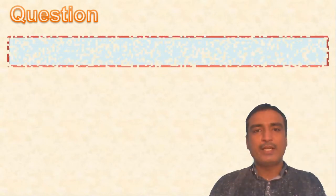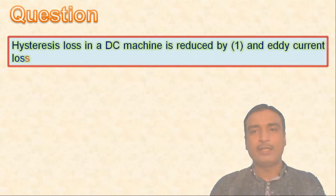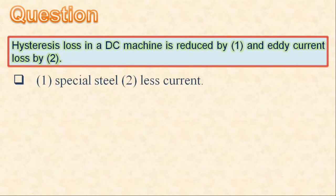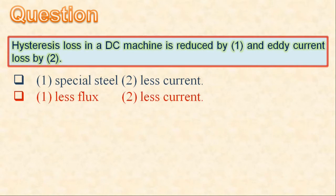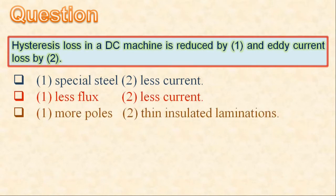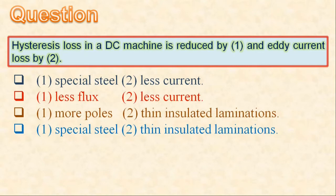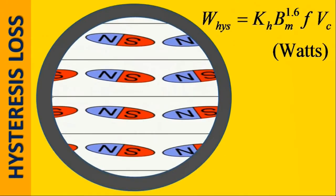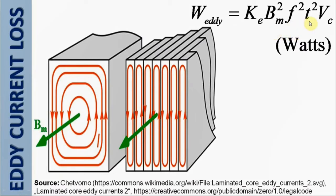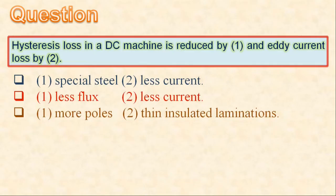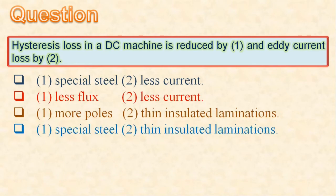Next question: hysteresis loss is reduced by (1) and eddy current loss by (2). Options: special steel / less current; less flux / less current; more poles / thin insulated laminations; special steel / thin insulated laminations. Hysteresis loss depends on maximum flux density and frequency of magnetic reversal; eddy current loss depends on the square of lamination thickness. Therefore, both losses are reduced by using special steel for the armature core and keeping lamination thickness as small as possible. The last option is correct.